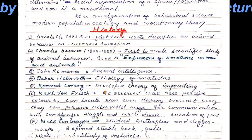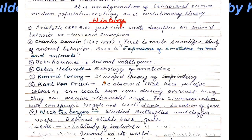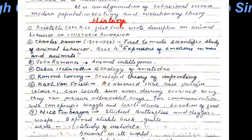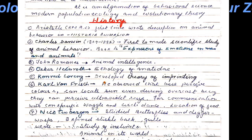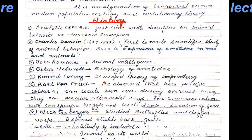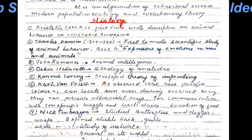John Romanes first described animal intelligence. Then Oscar Heinroth studied the ethology of the Anatidae family in detail. After that, the theory of imprinting was developed by Conrad Lawrence.